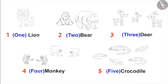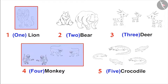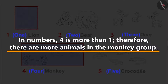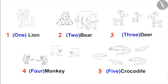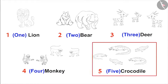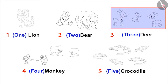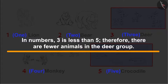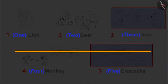Now can you tell me if there are more animals in the lion group or in the monkey group? There is one animal in the lion group and there are four animals in the monkey group. Amongst the numbers, four is more than one. Therefore, there are more animals in the monkey group. Very good, Pinky! Are there fewer animals in the deer group or in the crocodile group? There are three animals in the deer group and five animals in the crocodile group. Amongst numbers, three is less than five. Therefore, there are fewer animals in the deer group.